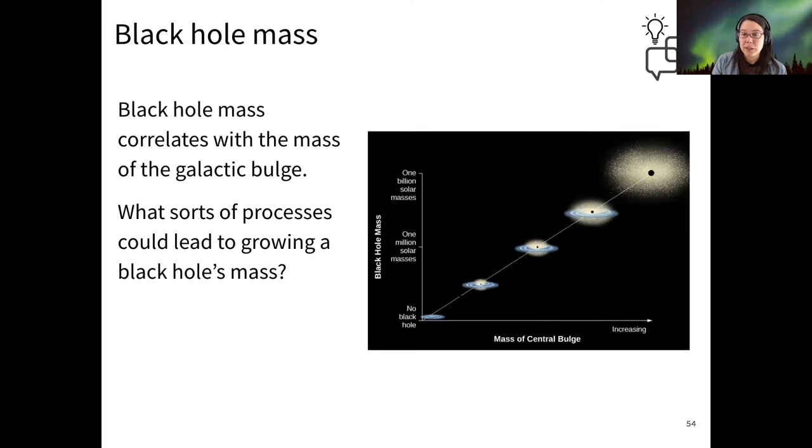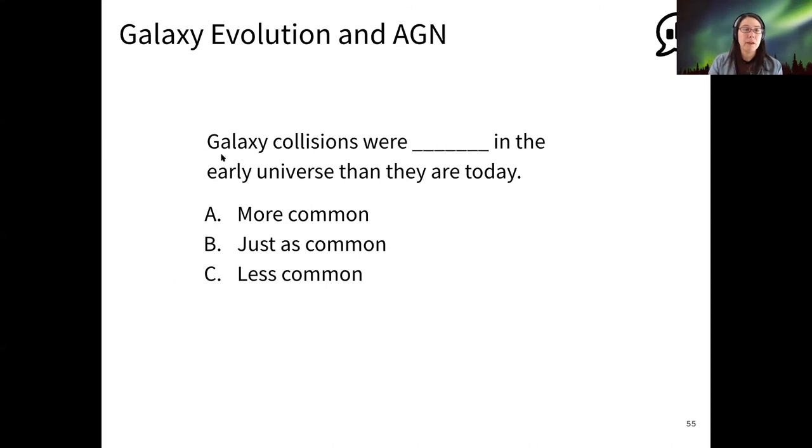But the reason that it has this particular linear relationship, and the black hole mass tends to be one two-hundredth of the mass of the overall galaxy - that specific detail, we don't know why it's that particular number. Okay, so thinking about galaxy evolution, do you think that galaxy collisions were more frequent in the past or more frequent today?